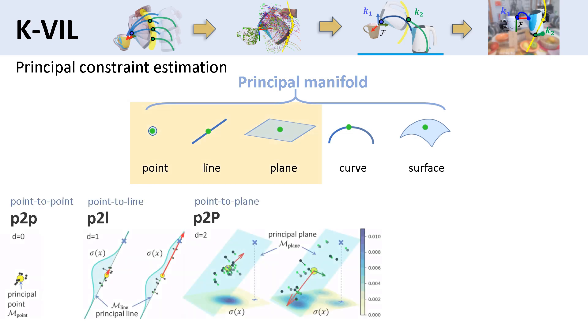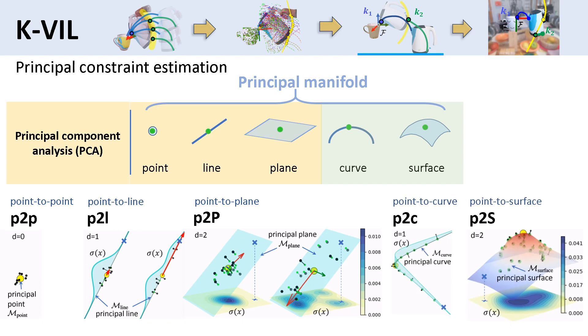We use the linear ones to define point-to-point, point-to-line, and point-to-plane constraints, and estimate them by PCA. The nonlinear ones define point-to-curve and point-to-surface constraints and can be estimated by the principal manifold estimation algorithm. Such geometric constraints allow extrapolation of the keypoint's target positions on the principal manifolds.